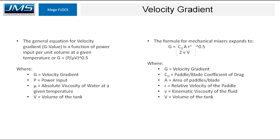We'll begin with velocity gradient, which is a measure of mixing intensity. The general equation for velocity gradient, or G-value, is a function of power input per unit volume at a given temperature. The gradient is dependent on power input, temperature of the water, and volume of the water you're mixing.